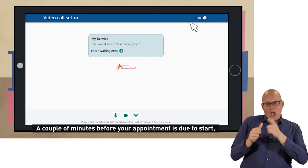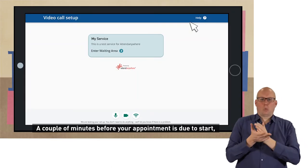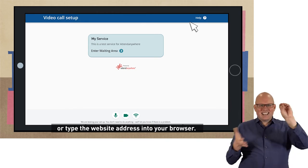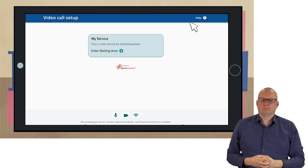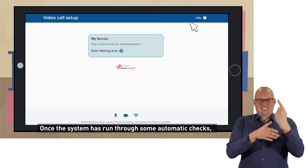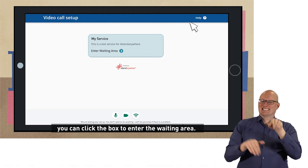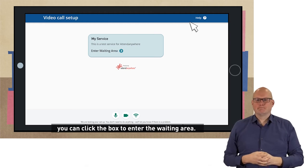A couple of minutes before your appointment is due to start click on the link you have been provided or type the website address into your browser. Once the system has run through some automatic checks to make sure everything is working you can click the box to enter the waiting area.